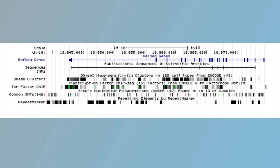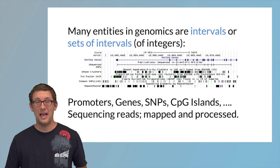There are DNA clusters, there are SNPs, there are repeat masked regions of the genome, and basically many entities in genomics can be thought of as intervals.